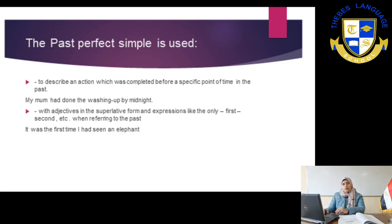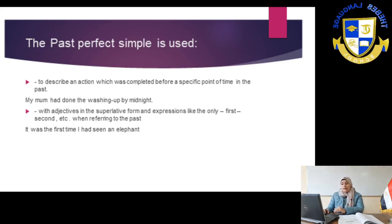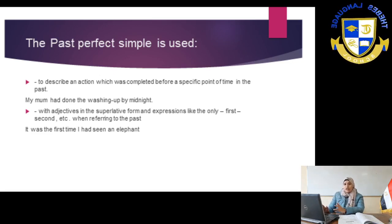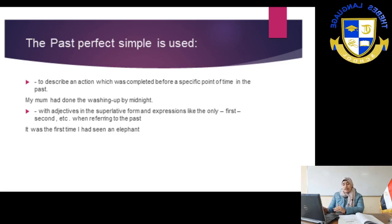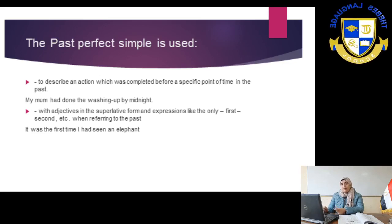We use the past perfect simple for many reasons. Number one: to describe an action which was completed before a specific point of time in the past. So if we have two actions and one preceded the other, action one should be in the past perfect and action two in the past simple. For example: My mom had done the washing up by midnight. So before a specific point of time, like 'by midnight' — 'by' here means 'before'.